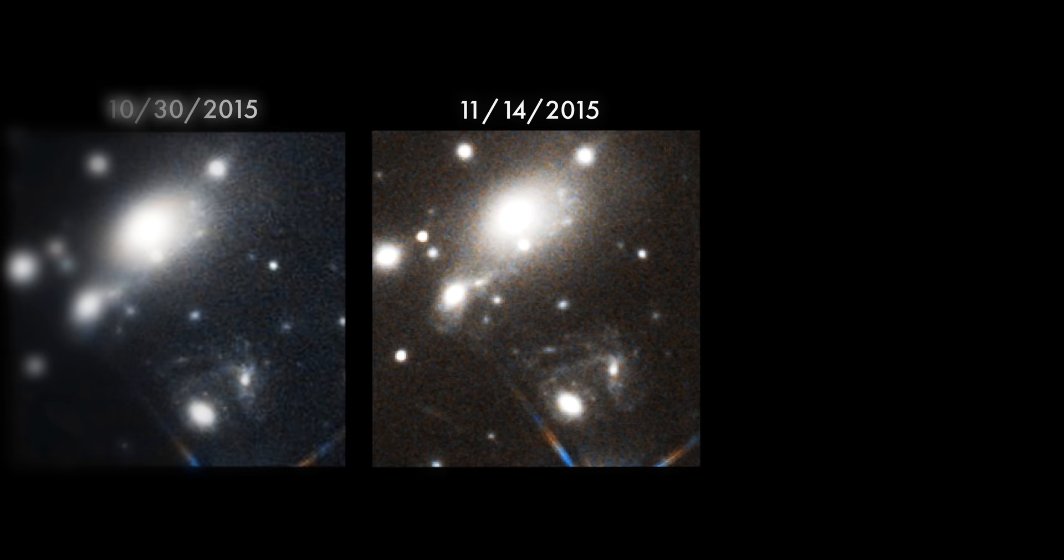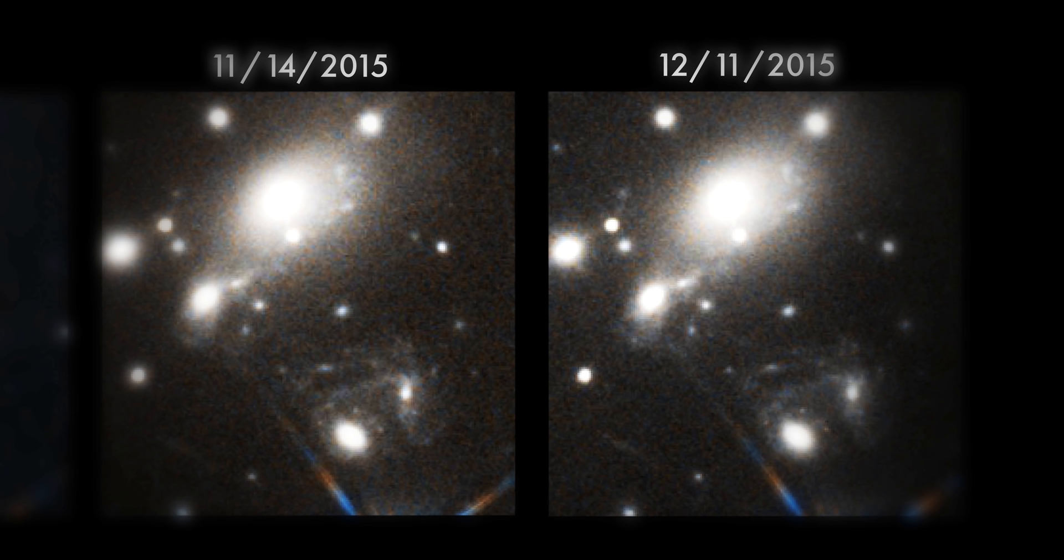But in the third image, taken on December 11th, jackpot. There's a supernova right where they predicted it would be and almost exactly when they said it would happen.